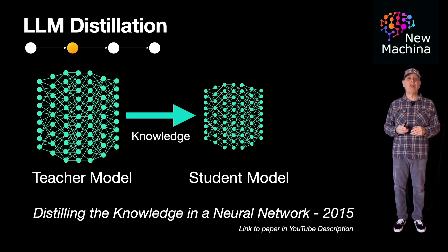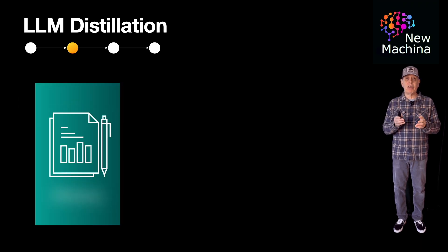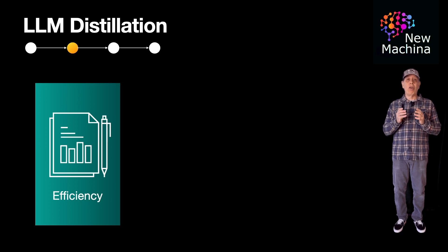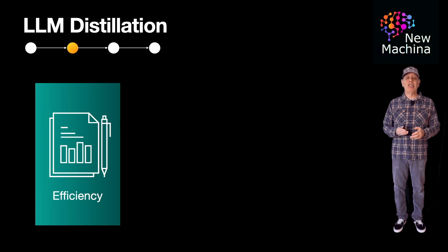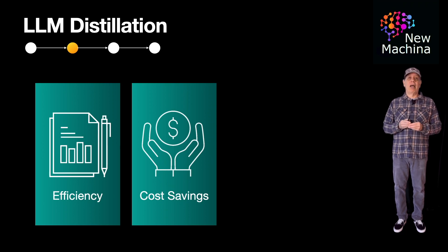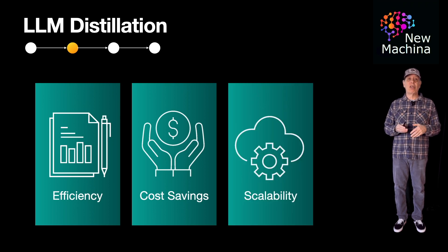So why use LLM distillation? One big reason is efficiency. Smaller LLMs require less computational power, making them suitable for edge devices or low-latency applications. And with better efficiency, you get cost savings — reduced resource consumption leads to lower inference and operational costs. Additionally, with more efficiency, you can scale up to more user tasks with less need for massive infrastructure.